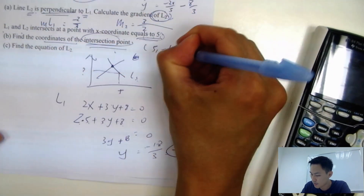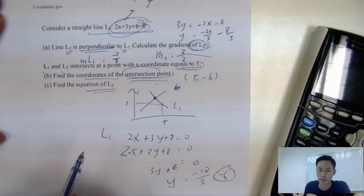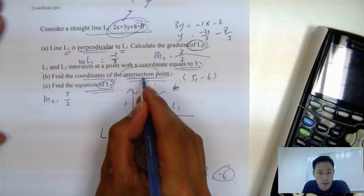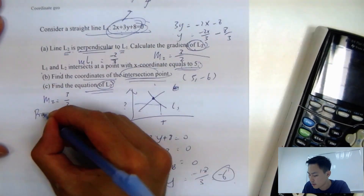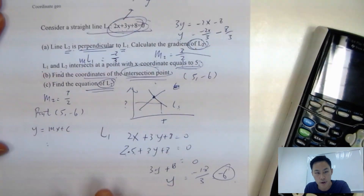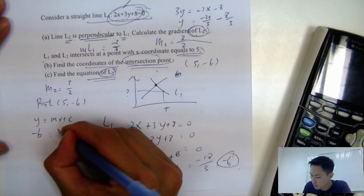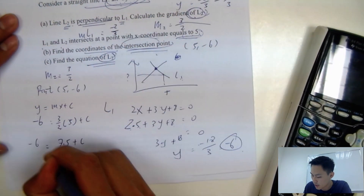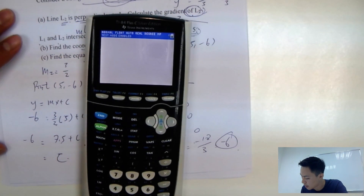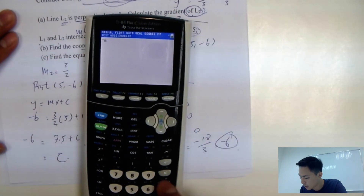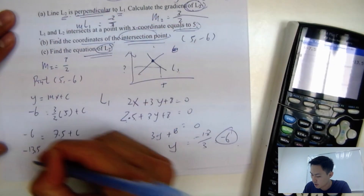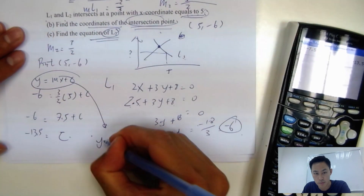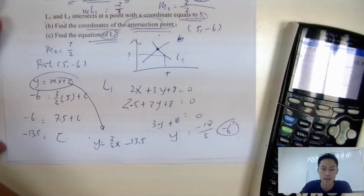Now find the equation of line 2. We know m2 = 3/2 and the line passes through (5, -6). Using y = mx + c: -6 = (3/2)(5) + c, so -6 = 7.5 + c, giving c = -6 - 7.5 = -13.5. The equation of line 2 is y = (3/2)x - 13.5. This is a typical 5 to 6 mark question in the IB exam.